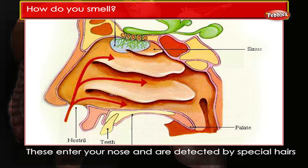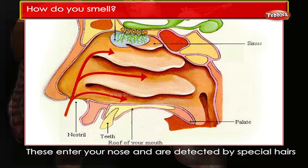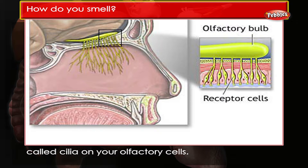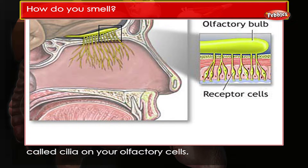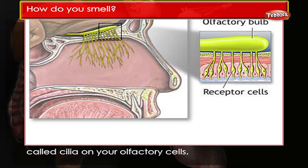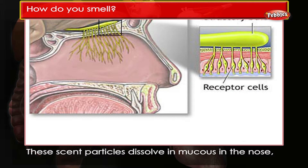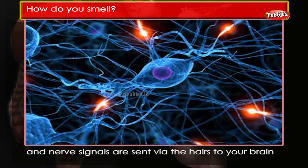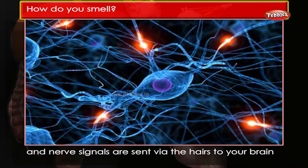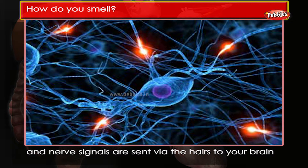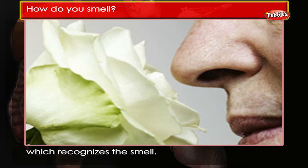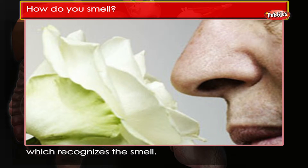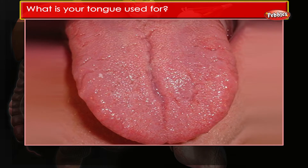How do you smell? Smells consist of small particles called odorants. These enter your nose and are detected by special hairs called cilia on your olfactory cells. These scent particles dissolve in mucus in the nose, and nerve signals are sent via the hairs to your brain, which recognizes the smell.